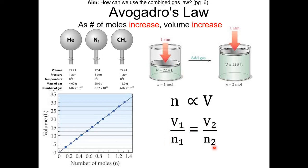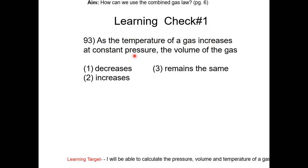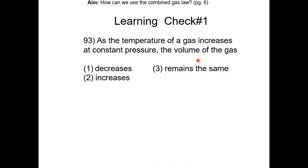Take a moment to watch a video about the gas laws — the link will be in the description. Learning check: as the temperature of a gas increases at constant pressure, the volume does what? Temperature and volume have a direct relationship according to Charles' law, so the answer is choice 2. Note that on the Regents, you do not need to know the names of each gas law — just the relationships.